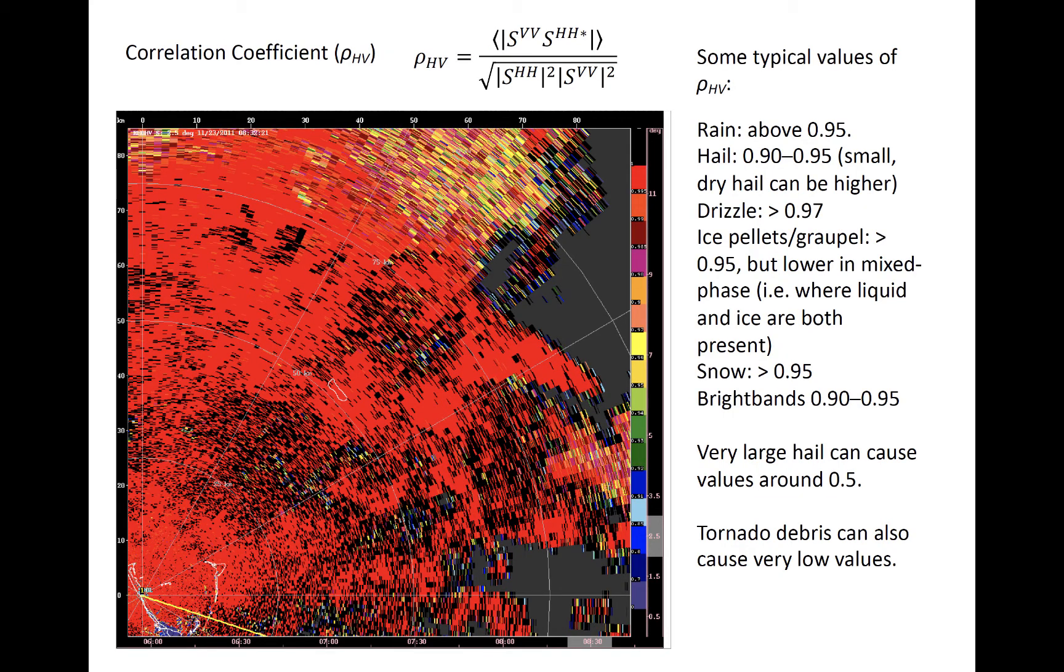The last dual pole variable we'll discuss is the co-polar correlation coefficient, often just called the correlation coefficient or rho HV, sometimes you'll see it denoted as cc. It describes the linear correlation between the return signals in the vertical and horizontal polarizations of radiation transmitted, respectively, in the same polarization. The asterisk in the equation here denotes the complex conjugate, which just means that the imaginary part of this SHH is multiplied by i squared. Values of rho HV are typically pretty close to 1, with values above 0.95 common in a variety of rain and frozen precipitation situations.